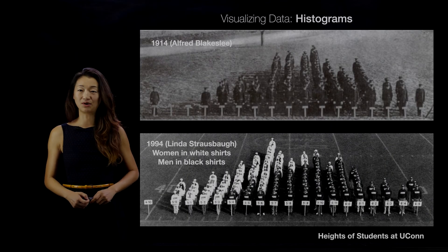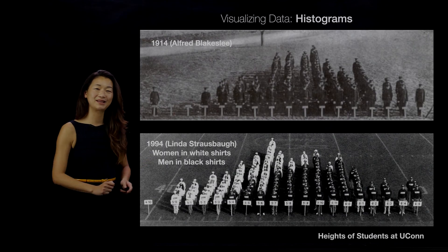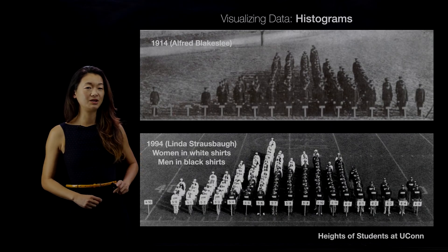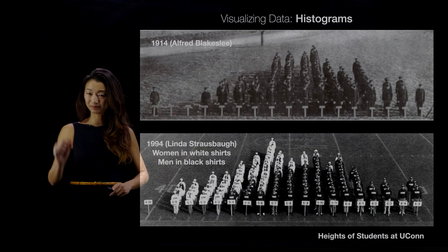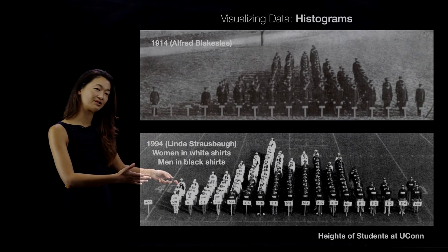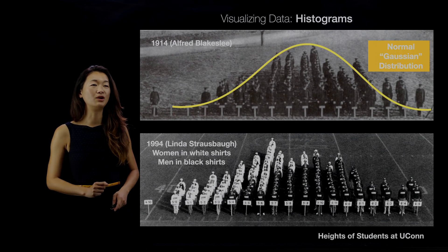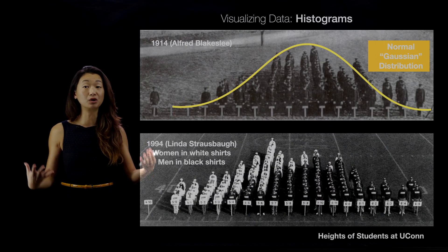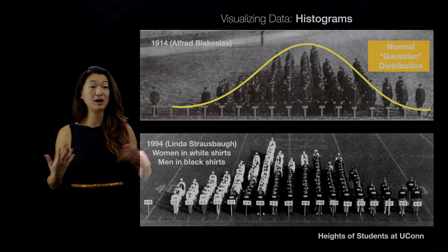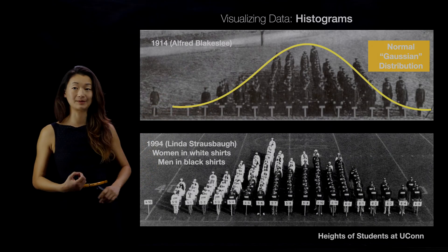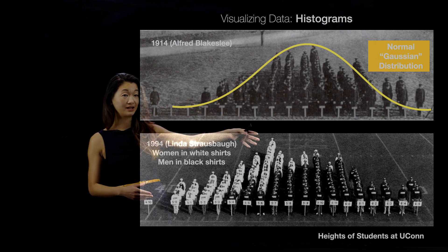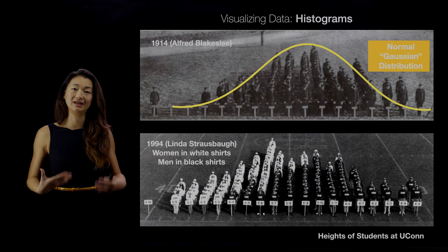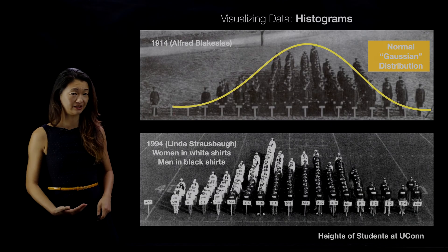Back then it was all men, so there was one distribution. This experiment was repeated at the University of Connecticut in 1994 by Linda Straussburg, where women wore white shirts and men wore black shirts, and they all lined up behind a placard of how tall they were. The distribution for men versus women is slightly different, but for men only, the histogram followed what we call a normal or Gaussian distribution — also called the bell curve — with the vast majority of people in the middle and some who are way shorter or taller.